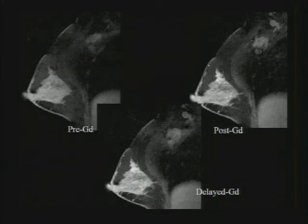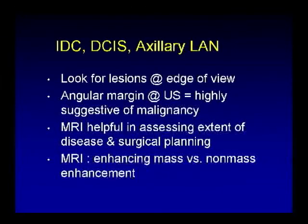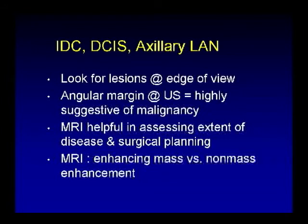This is a case of invasive ductal carcinoma with DCIS and axillary lymphadenopathy. Teaching points: look for lesions at the edge of the view at screening. Angular margin at ultrasound is highly suggestive of malignancy. MRI helps assess extent of disease — multicentric and multifocal disease, pectoral muscle involvement — aiding surgical planning. At breast MR, assess for enhancing mass versus non-mass enhancement.